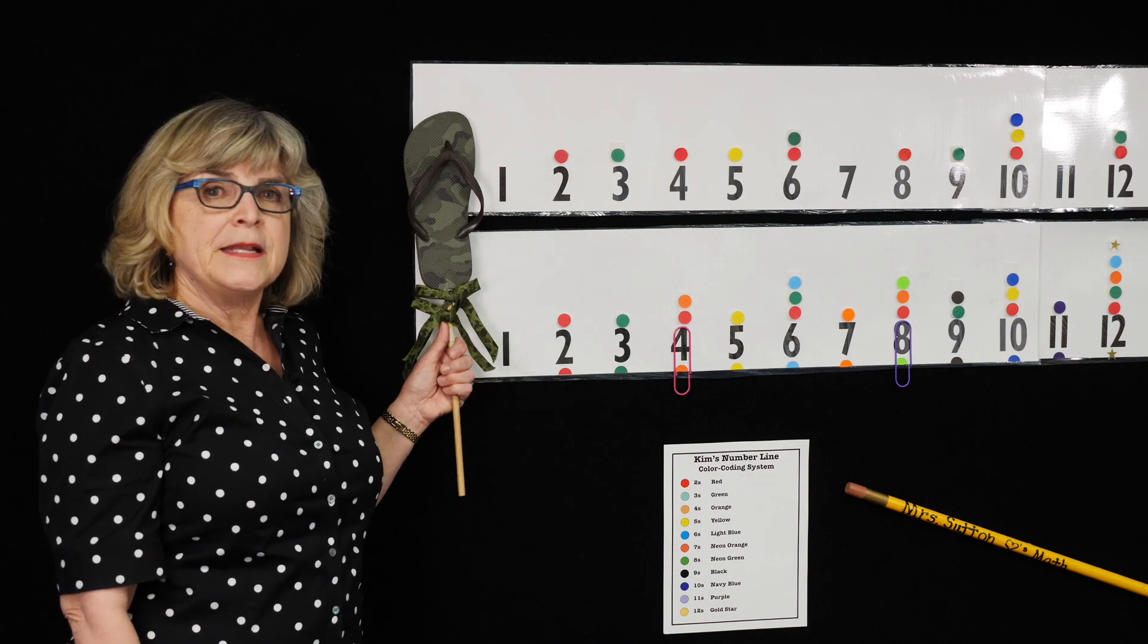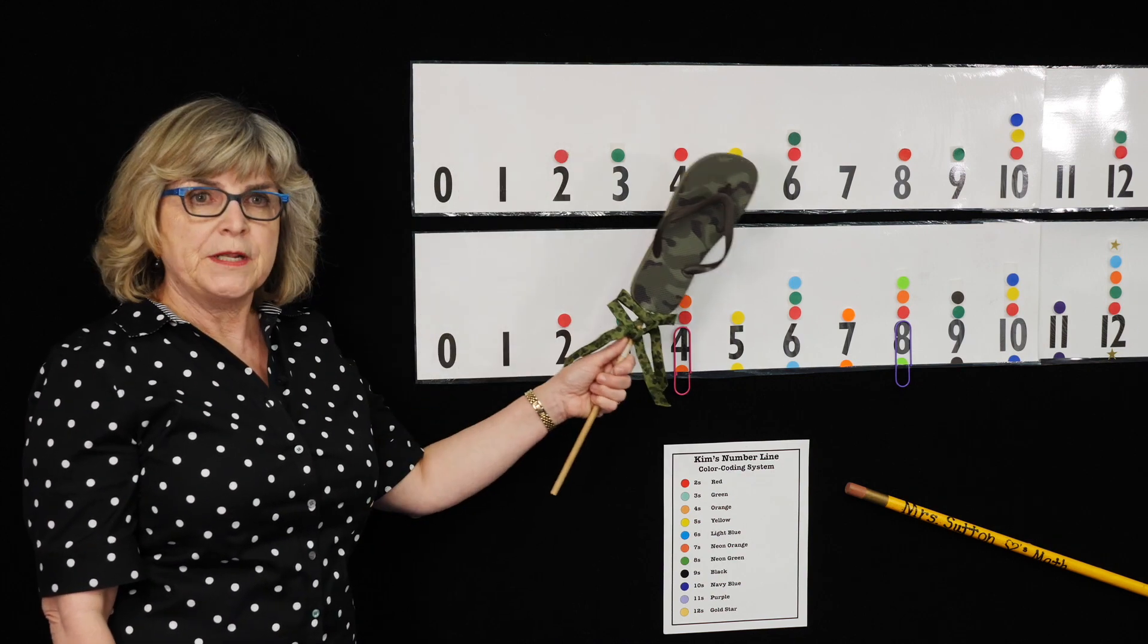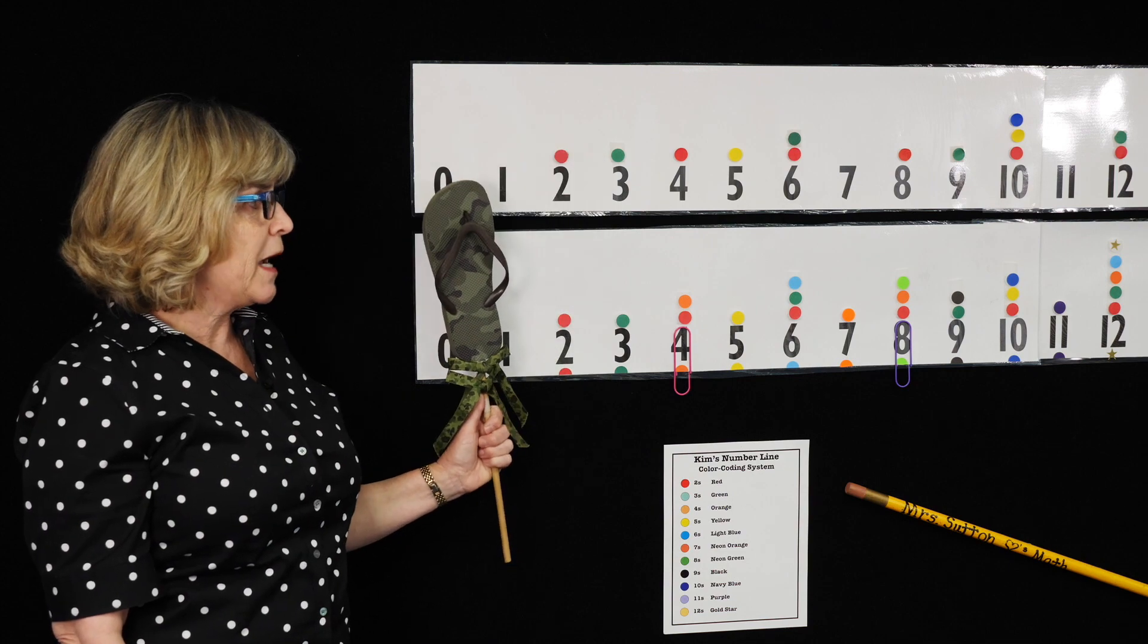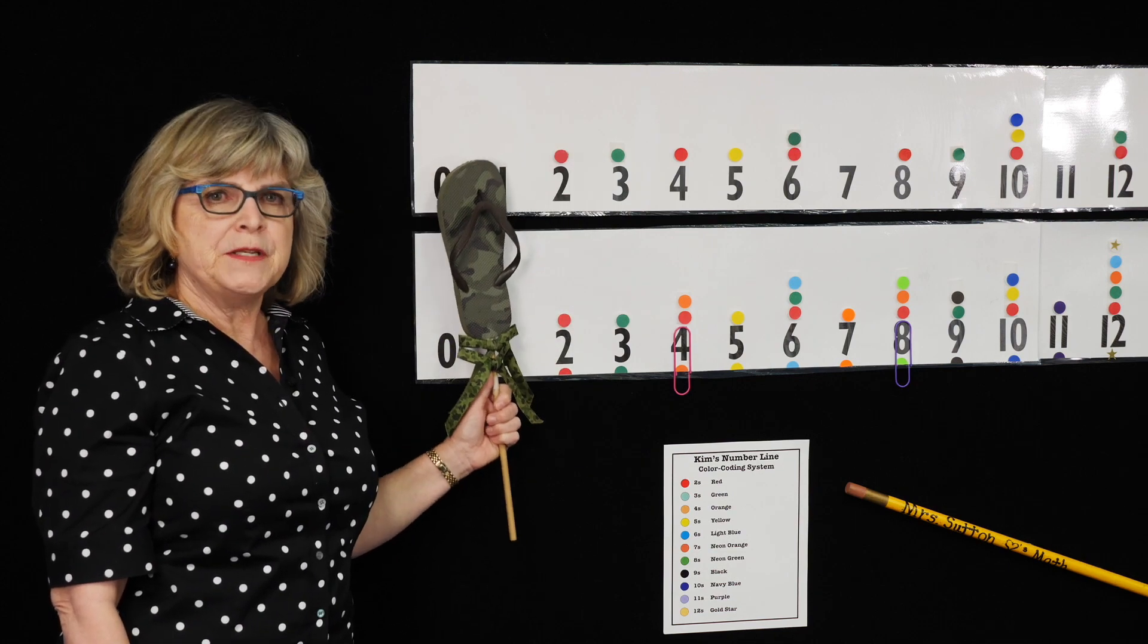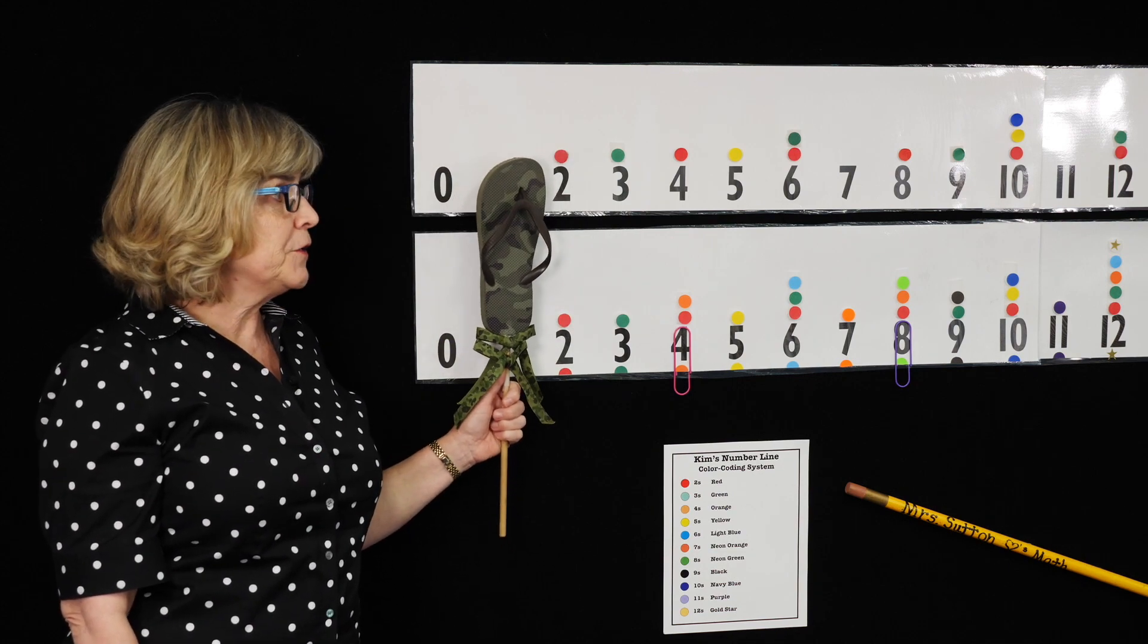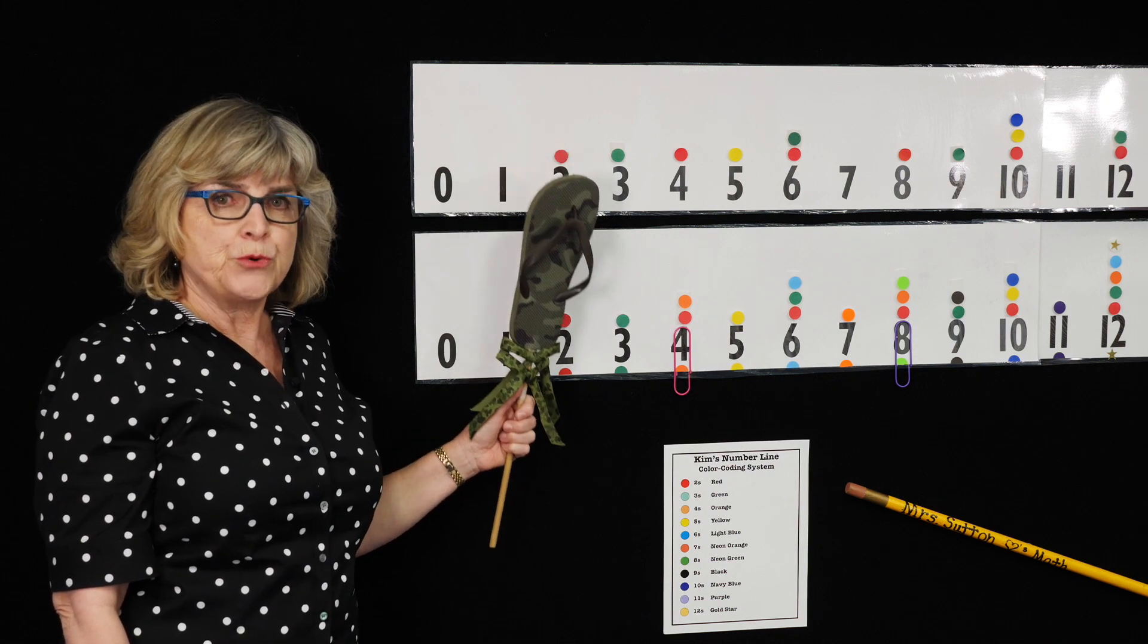The number line comes in strips from point of origin to 144. It also comes with all the dots to be able to color code the multiples and factors 2 through 12.